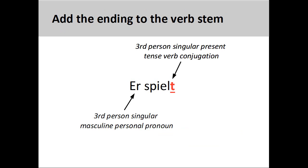Once that is done, we simply add that ending to the verb stem to produce 'er spielt', 'he plays'. Both the subject and verb are in third person singular, creating subject-verb agreement.